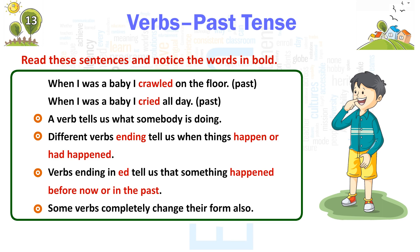A verb tells us what somebody is doing. Different verb endings tell us when things happen or had happened. Verbs ending in ED tell us that something happened before, now or in the past. Some verbs completely change their form also.